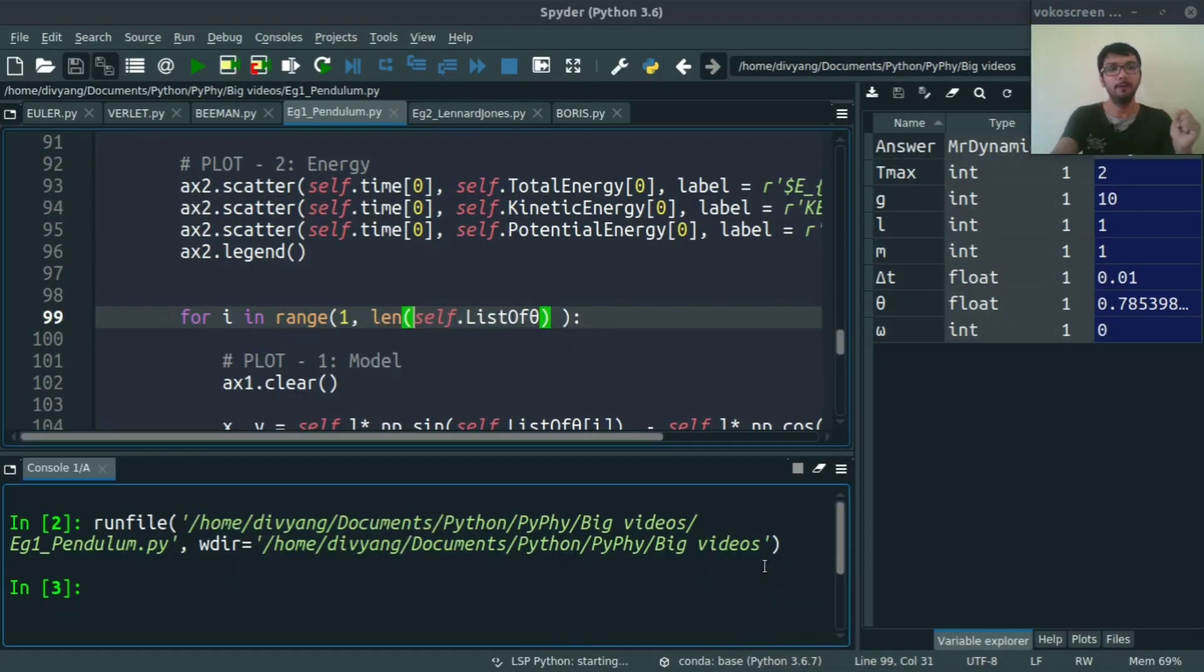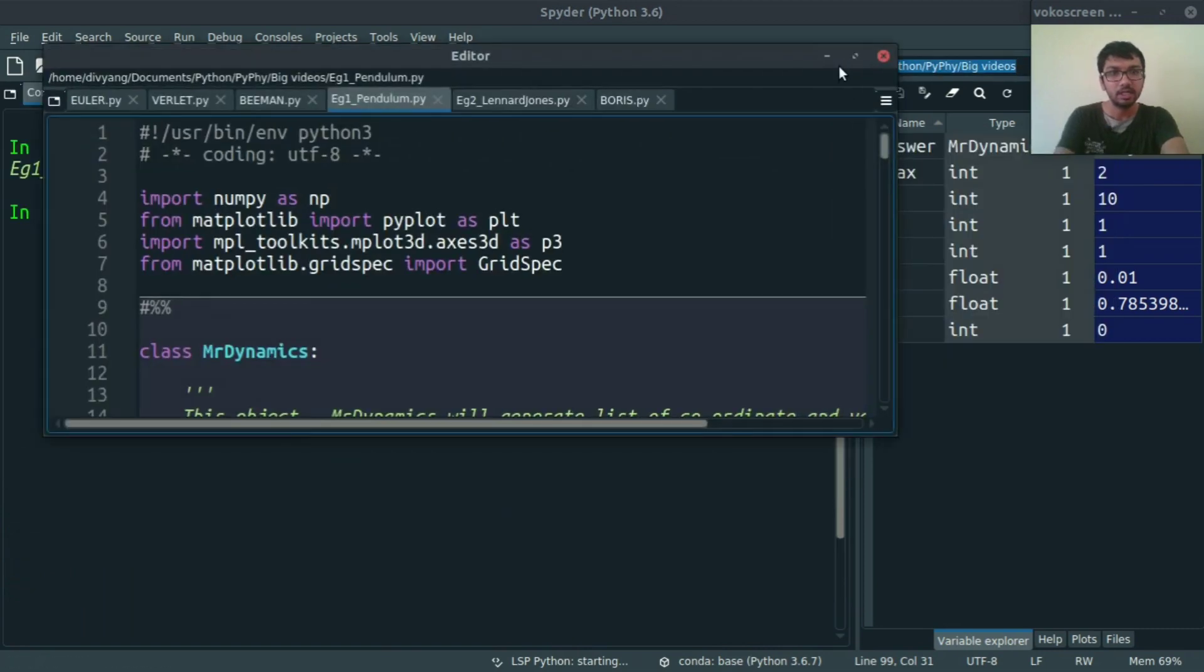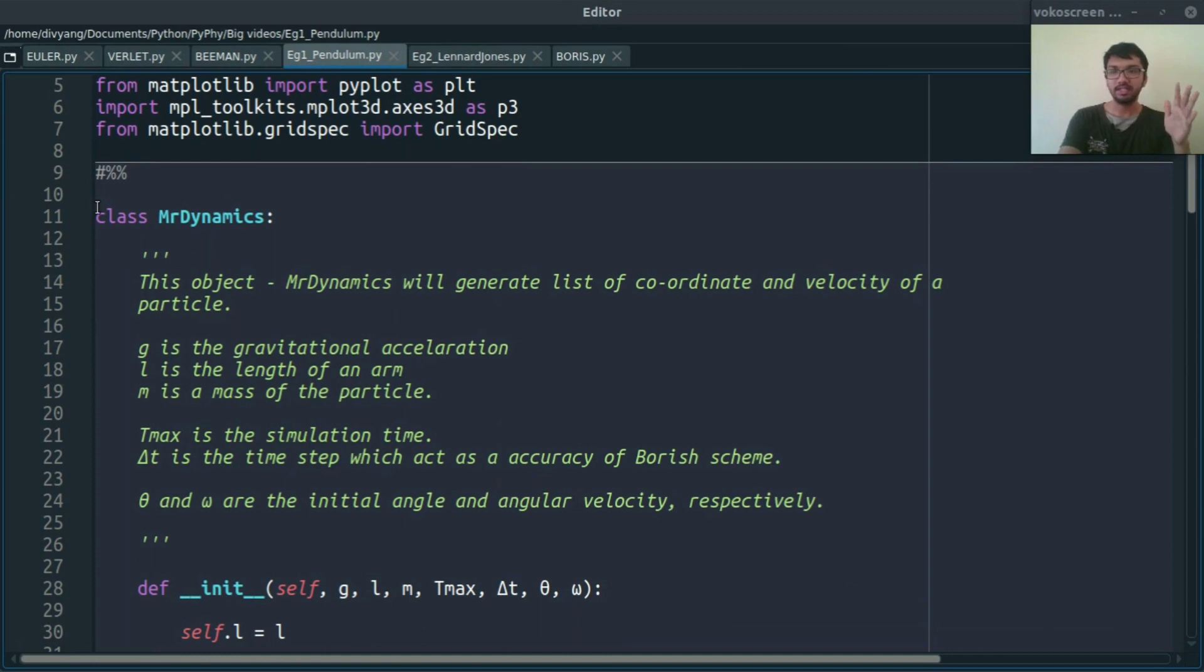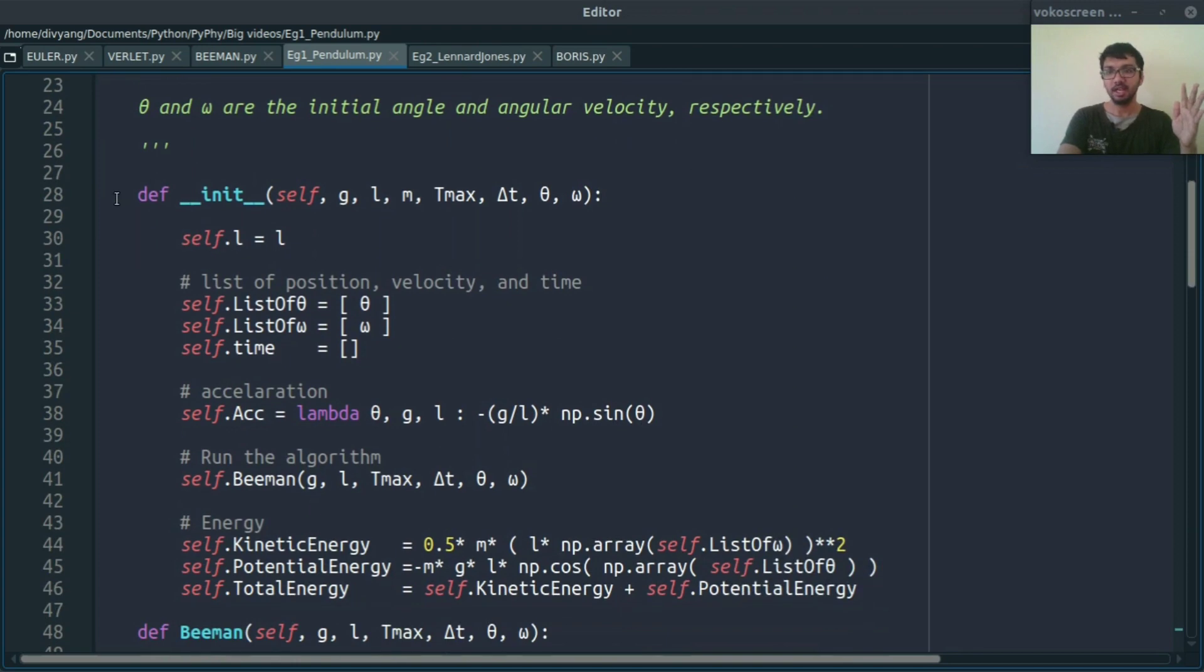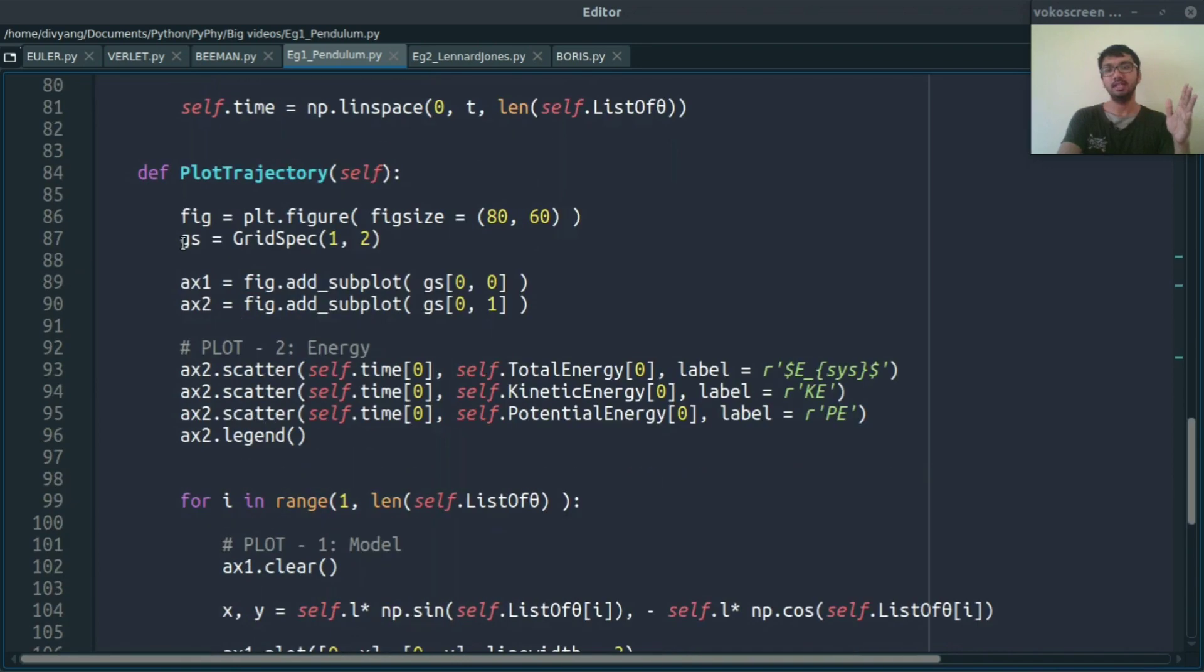So without wasting time let's jump to the code. Okay, so this is the code. The entire code is the same. I am again defining this MD dynamics class, this is the initialization part, this is the heart of MD dynamics, the algorithm part. In this case we are using Beeman's algorithm and this is the plotting part.